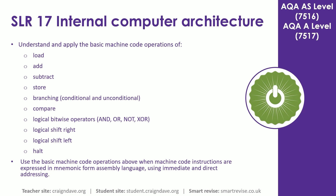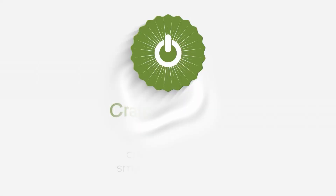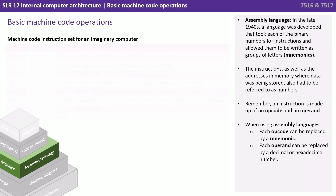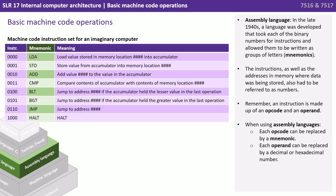In this video we look at how you use the basic machine code operations when machine code instructions were expressed in mnemonic form — assembly language — using both immediate and direct addressing. Assembly language took each of the binary numbers for instructions and allowed them to be written as groups of letters known as mnemonics. The instructions, as well as the addresses in memory where data was being stored, also had to be referred to as numbers.